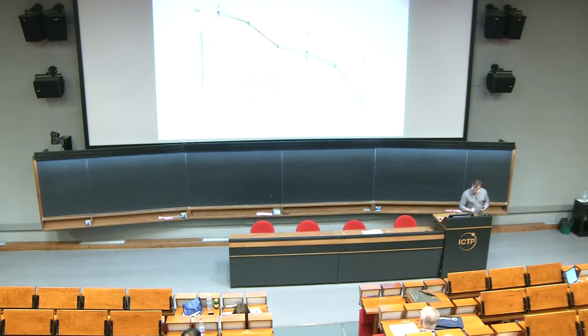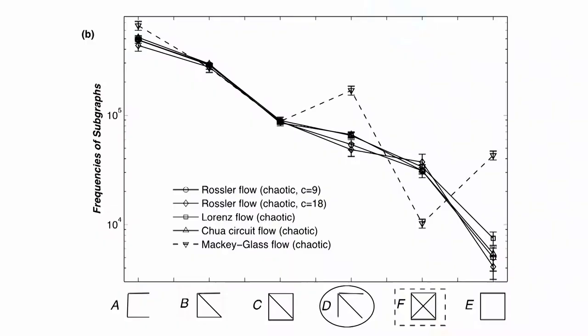If I do the same thing in the case where the underlying system is chaotic, the ordering of these subgraphs changes. This is a simple consequence of the local topological dimension of your attractor. If your attractor is locally one-dimensional, you can't see this occur. If it's locally higher-dimensional, then you will see this occur.